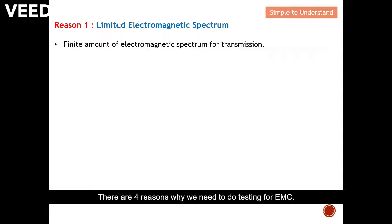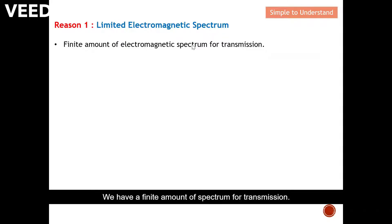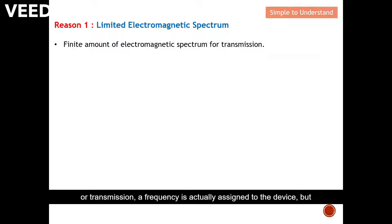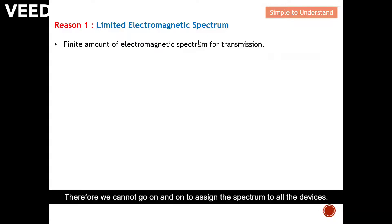There are four reasons why we need to do EMC testing. The first reason is because of the limited electromagnetic spectrum. We have a finite amount of spectrum for transmission. When we want to establish communication or transmission, a frequency is assigned to the device — however, we have a finite amount of spectrum, so we cannot keep assigning spectrum to all devices.